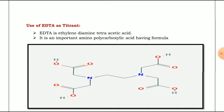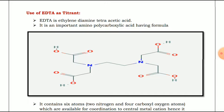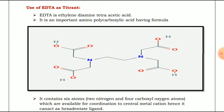In H4Y, the 4H represents the 4 hydrogen atoms attached to the 4 oxygens at each terminal of the EDTA structure, and Y represents the inner part of the structure. EDTA contains 6 donor atoms: 2 nitrogen and 4 carboxylic oxygen atoms available for coordination to a central metal cation. Hence, it can react as a hexadentate ligand.